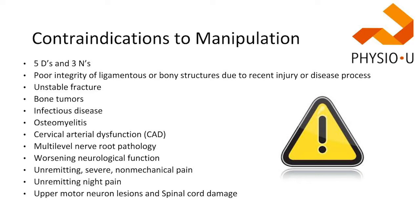People with nerve root pathology — radiating arm pain or leg pain — or any type of neurological reflex changes, we're probably not going to do high velocity thrusts to that spine. We want to play it safe. However, if someone just has numbness and tingling in their leg but reflexes are normal and myotomes are normal, I have no problem performing a thrust on that patient, knowing I've checked for safety.